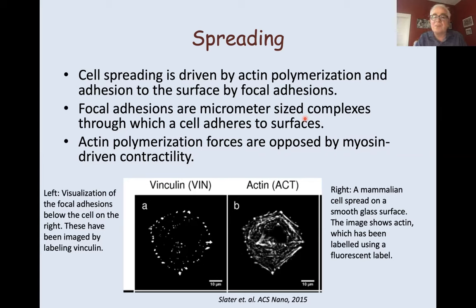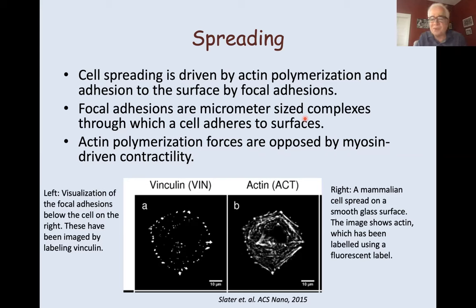Actin polymerization forces are opposed by myosin-driven contractility. Both of these come from very specific protein-protein interaction programs inside the cell, which determine how much actin polymerization is going to happen and how strong the myosin-driven contractility is. This image shows a spread cell in which you can see the focal adhesions, as well as the structure of actin, and you can see how the two correspond very nicely with each other.